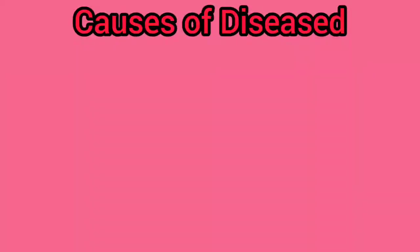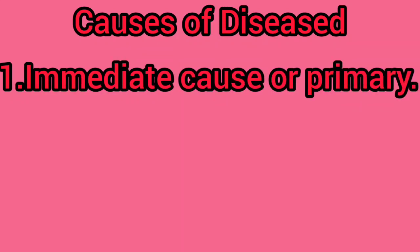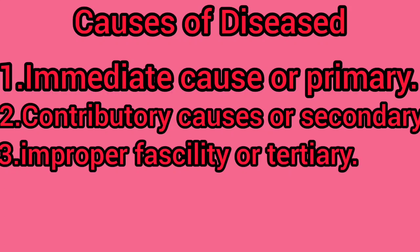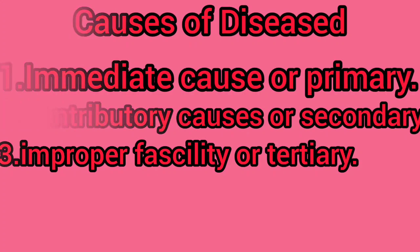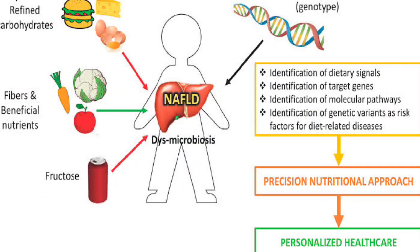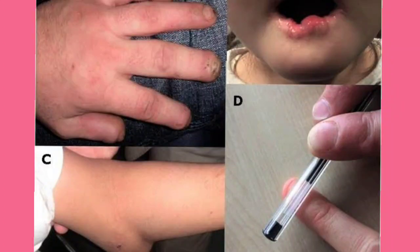Now, what are the causes of diseases? Agar hum inhe divide karein, to ek immediate cause hai, doosra contributory cause hai jise secondary bhi keh sakte hain, aur teesra improper facilities hai jise tertiary bhi keh sakte hain. Immediate cause means kisi disease ka aana because of bacteria, virus, fungus, worm, or protozoa — koi bhi infectious disease ka achanak aana. Contributory or secondary causes can be lack of good nutrition or poor genetic constitution.